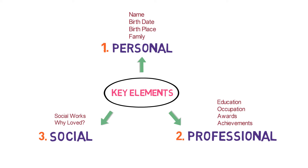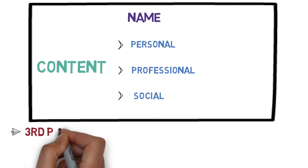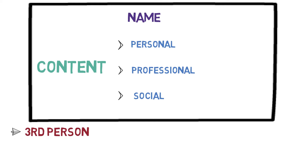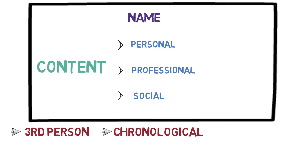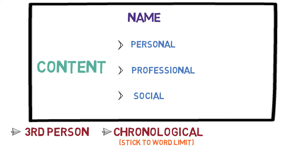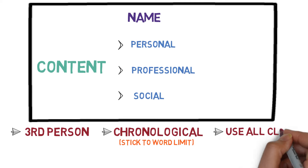While writing the content, please remember these three points. First, it must be written in third person, as it is written by someone else. Second, the summary must be in chronological order — meaning first personal life, then professional life, and then social life — and you must stick to the word limit given in the paper. Third, if clues are given in the question, then none of them should be skipped.